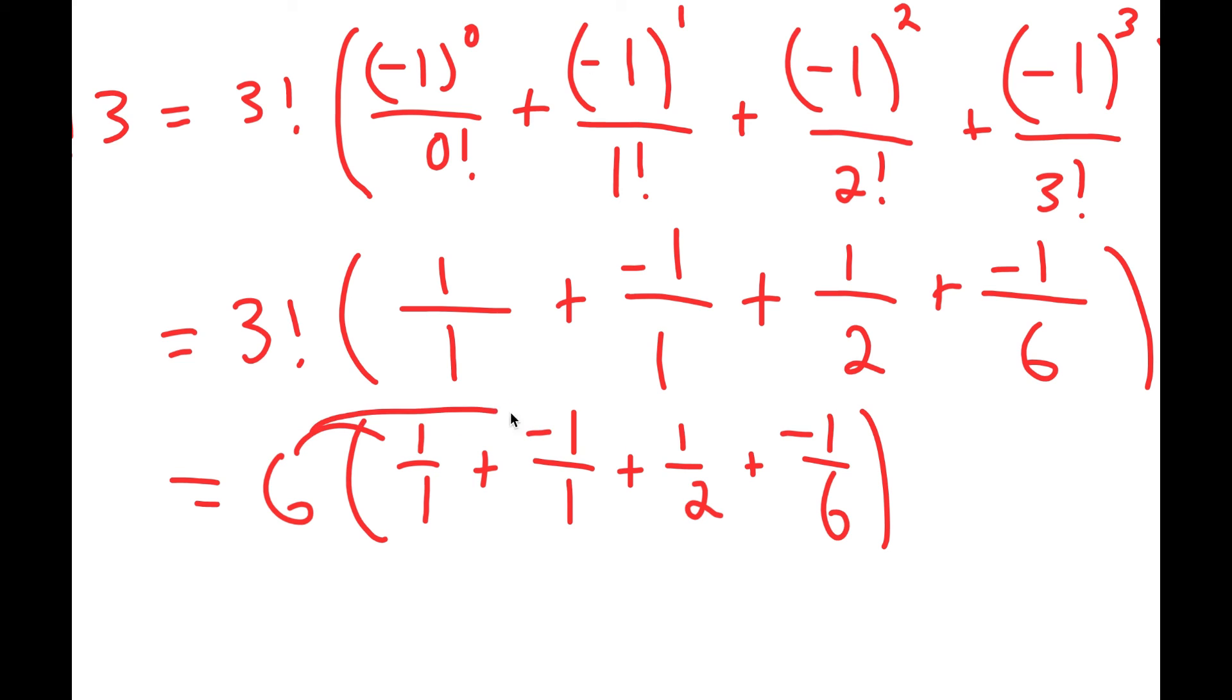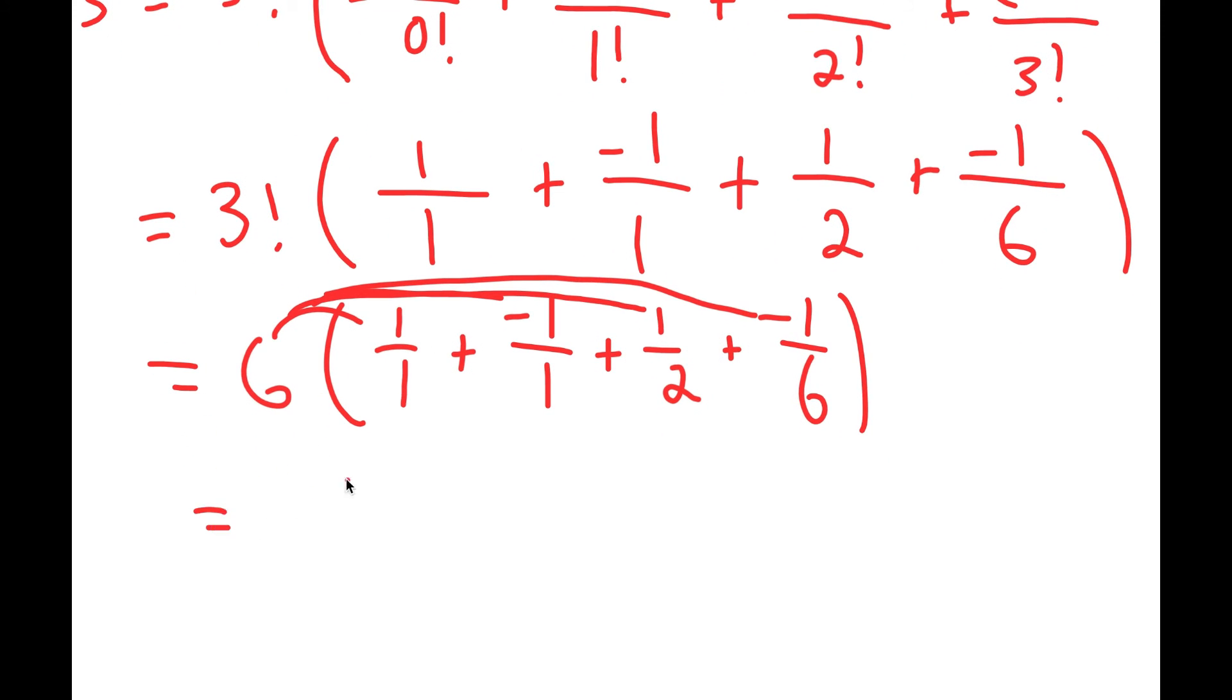And I can actually multiply six with all of these terms. Six times one over one is going to equal six over one. And I have minus six over one, plus six over two, plus six over six.